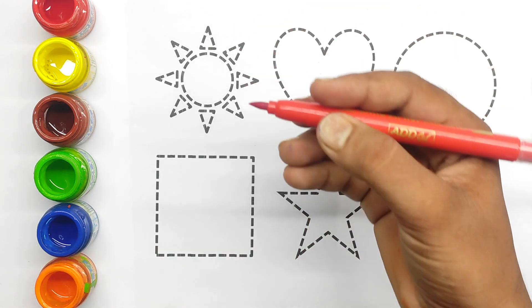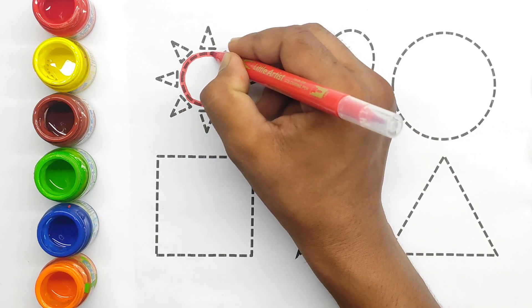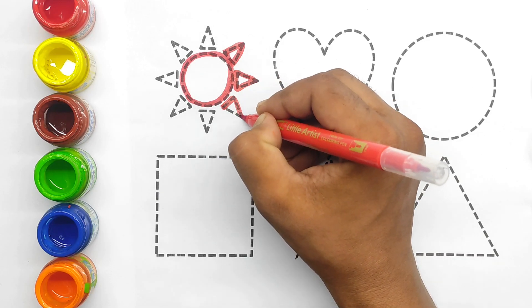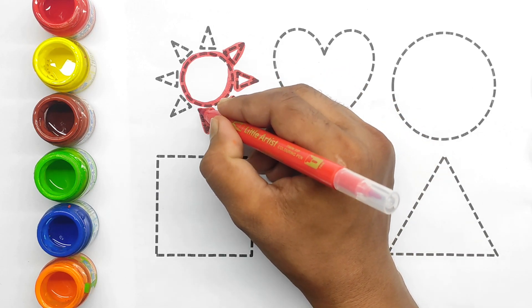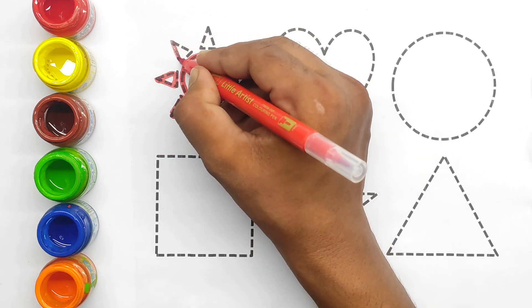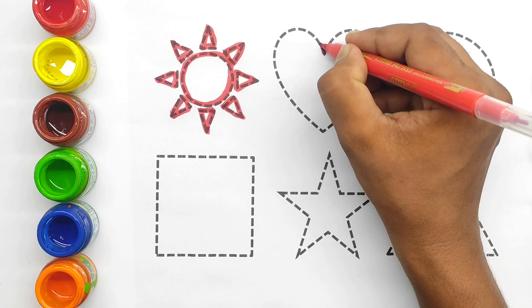This is red color. Sun. This is sun, a 2D shape.